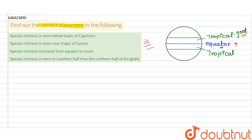Moving further, we reach the temperate region, shown here in black. In the temperate region, you will find less diversity — not zero, and not nearly zero, but noticeably less diversity compared to the tropical region.